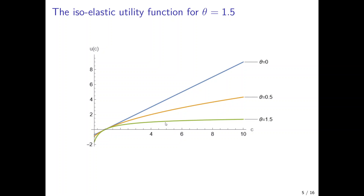If you offer a risk-averse person a lottery where they can win three times their current money but there is a small probability of losing everything, such an individual would not buy the lottery ticket. The additional utility they can gain is very limited because the utility function is already very flat at higher consumption levels, but they can lose a lot if they end up with a low income and low consumption. For the risk-neutral individual this is not the case — it's not so bad to end up with nothing compared to the individual with high risk aversion.